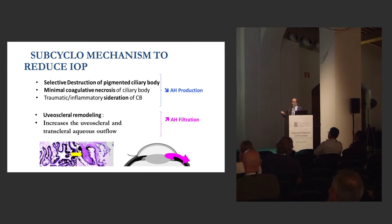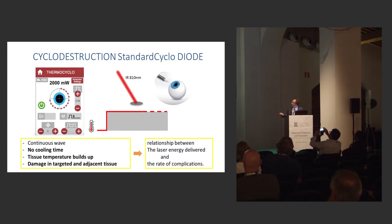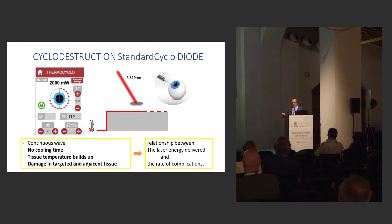It also works on uveoscleral outflow, and I will show you some images later. The standard diode laser is well known — it's usually done at over a thousand milliwatts and during two seconds as a continuous wave, with no cooling time. The tissue temperature builds up, causing damage to adjacent tissue, and there is a direct relation between laser energy delivered and the rate of complications.